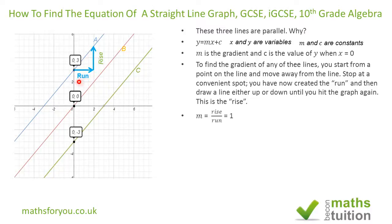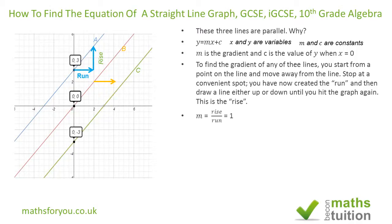In this case the rise is 2 and the run is 2, so divide 2 by 2 and you get 1. You have to be very careful here: 2 units on the y-axis are longer than 2 units on the x-axis on the diagram. Nevertheless, it is 2 units rise and 2 units run, so divide 2 by 2 and you get a gradient of 1.